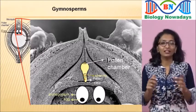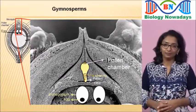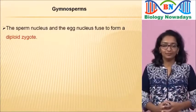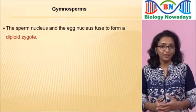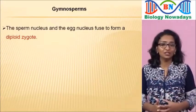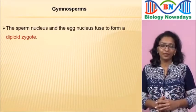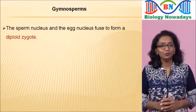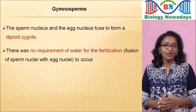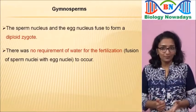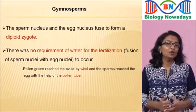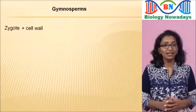The sperm nucleus and the egg nucleus fuse to form a diploid zygote. One thing to be noted is that, unlike algae, bryophytes and pteridophytes, there was no requirement of water for fertilization to occur in gymnosperms. Pollen grains reached the ovule by wind and sperms reached the egg with the help of the pollen tube. The zygote now secretes a cell wall and becomes an oospore.